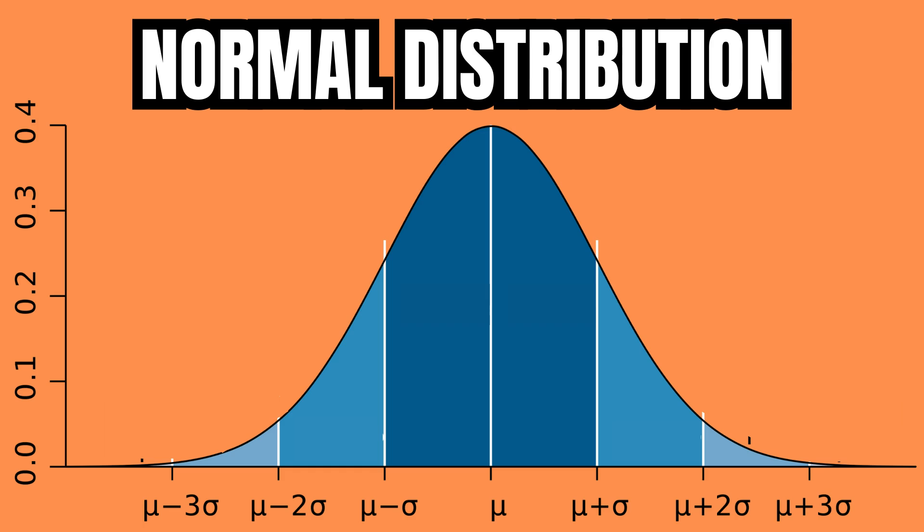A normal distribution curve is drawn so that 68.2 percent of the data fall within plus or minus one standard deviation of the mean, 95.4 percent of the data fall within plus or minus two standard deviations of the mean, and 99.7 percent of the data falls within plus or minus three standard deviations of the mean, and the rest of the data falls outside of that.